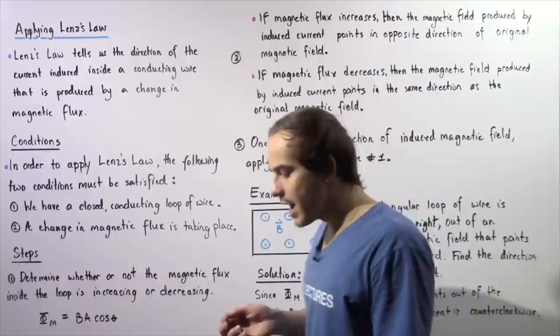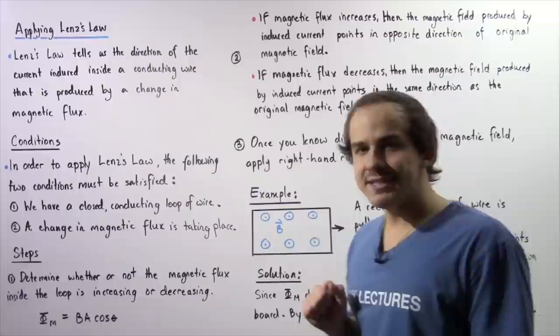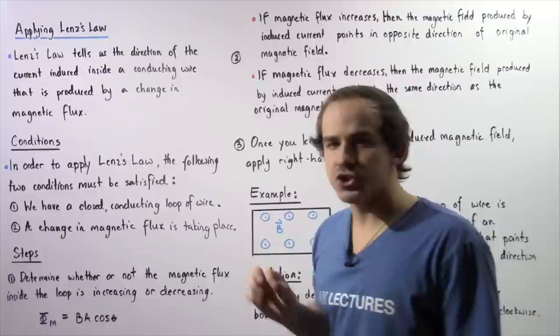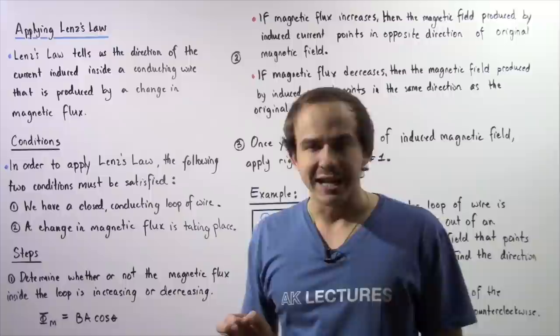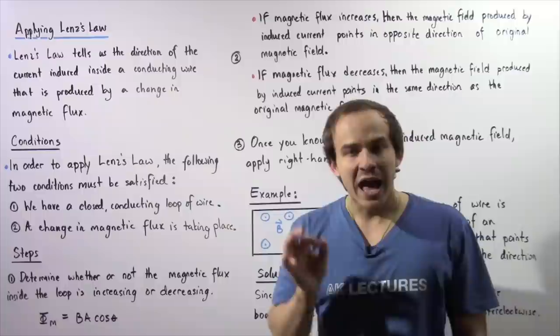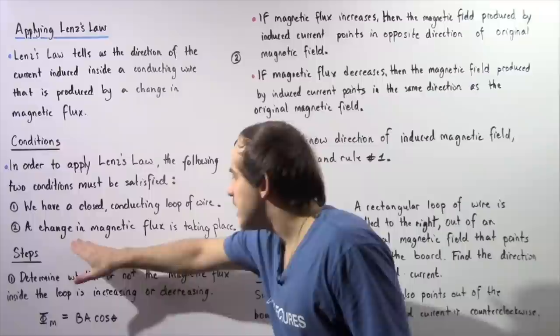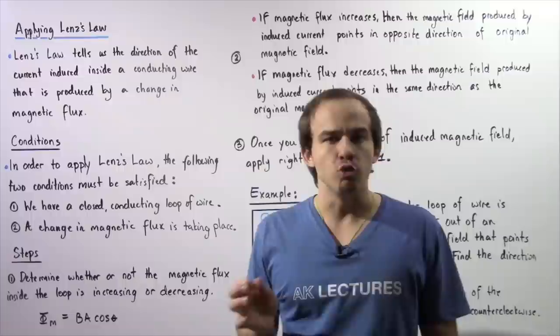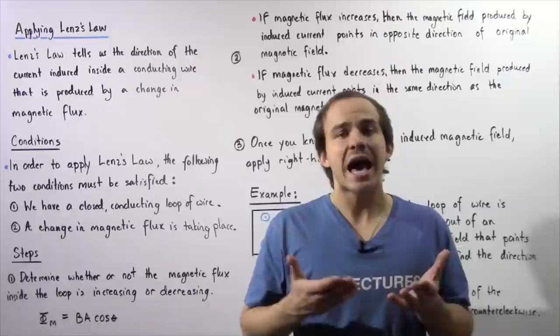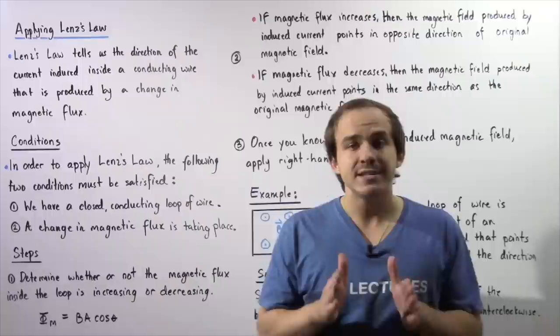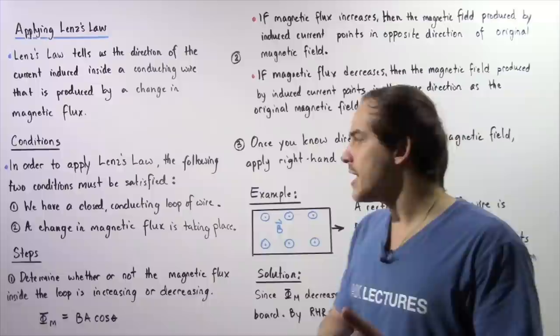Under which conditions should we apply Lenz's Law? Two conditions must be satisfied. Condition number one: we have to have a closed conducting loop of wire with some area A. Condition number two: a change in magnetic flux must be taking place inside the loop. If there is no change in magnetic flux, there is no induced EMF and no induced electric current.